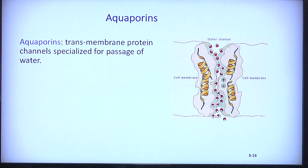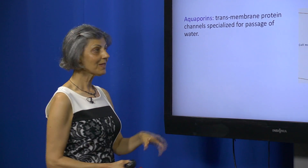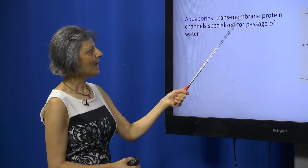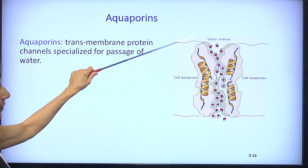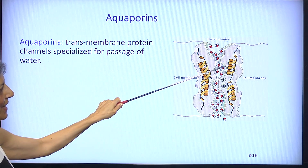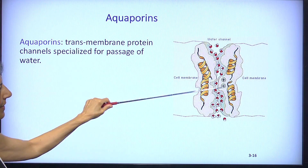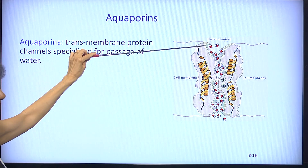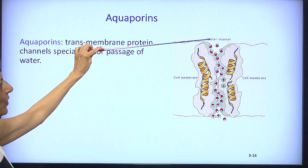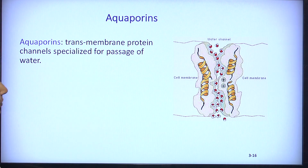Movement of water is not only through osmosis — it can also occur through specific plasma membrane channels called aquaporins. These proteins allow water to move from an area of higher concentration to lower concentration.